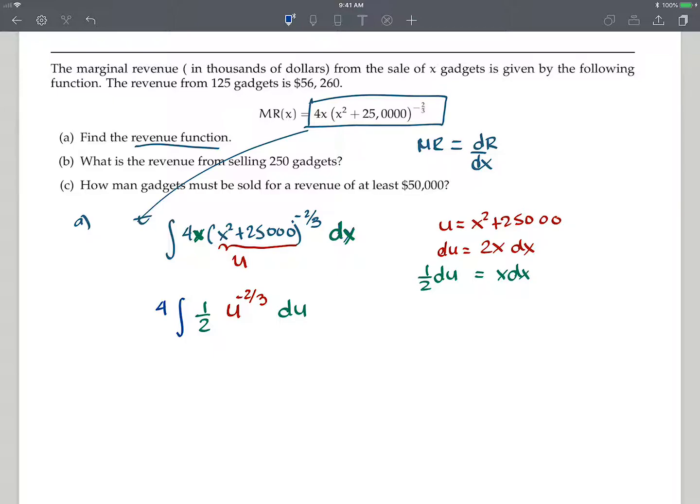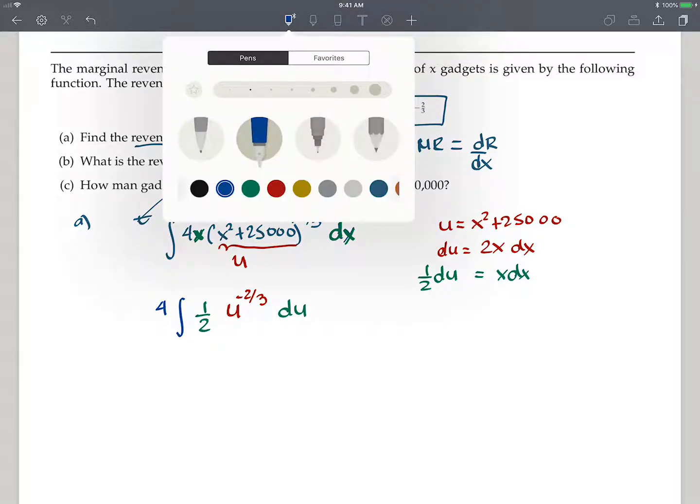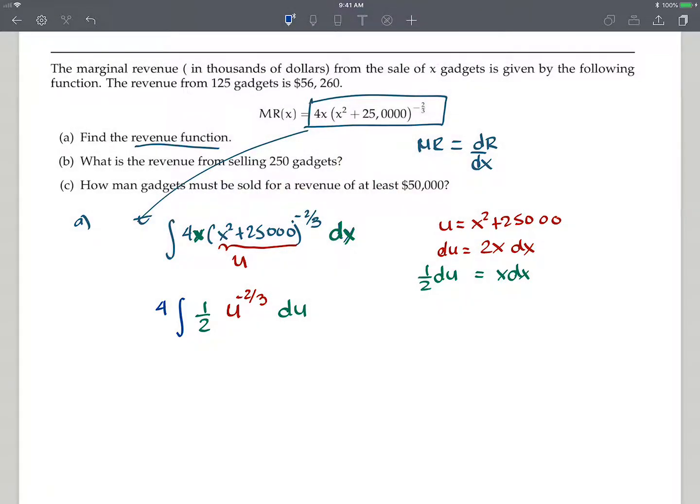Okay. So now what I'm going to do is, let's see, let's do all the constants together. So I have u to the negative 2/3. And then I have x dx, which is one half of du. And the four is outside. Okay, so now let's just do one color. And I really have just integral of two u to the negative 2/3 du.